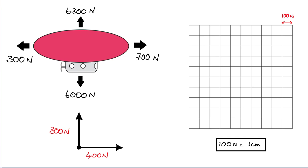In your AQA GCSE exams, you would not be expected to use trigonometry in this type of question, as it cannot be assumed that all students have that level of maths — although most of you could probably do it with trig, no problem. You'd be asked to represent this information on a grid like this, where you're given a scale. In this case, each grid square represents 100 newtons. We have a resultant force of 400 newtons in the horizontal direction — that's four grid squares to the right — and then 300 newtons in the vertical direction upwards — that's three grid squares.